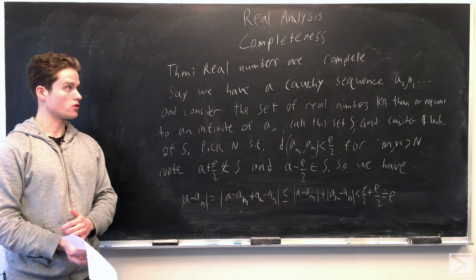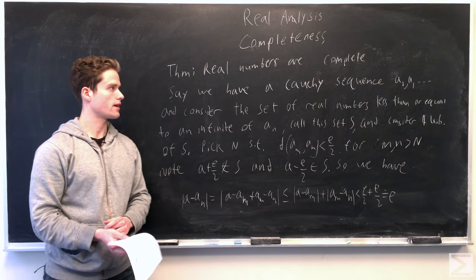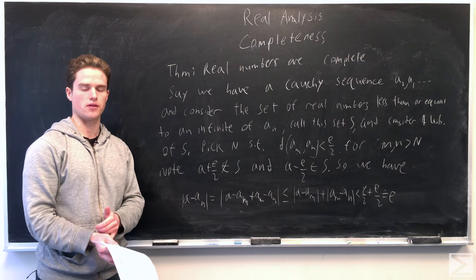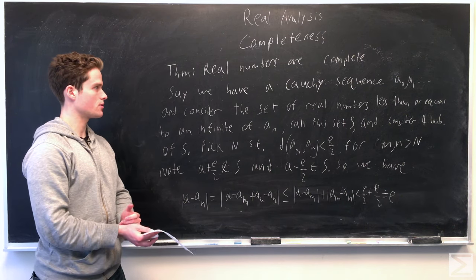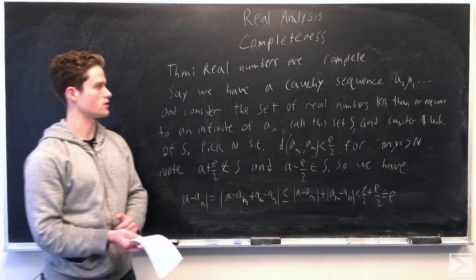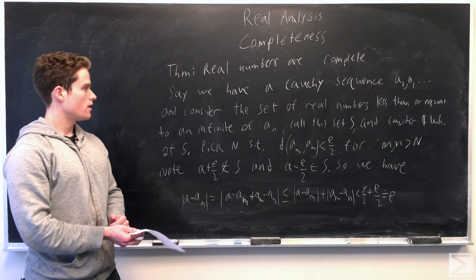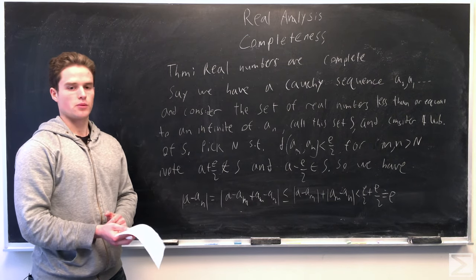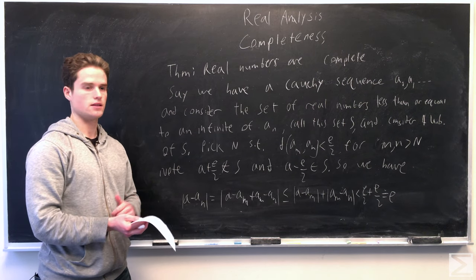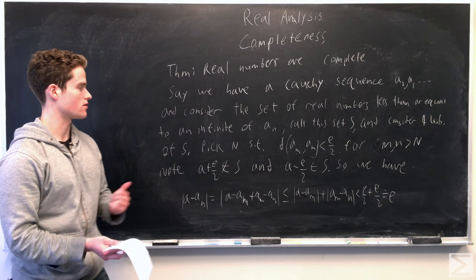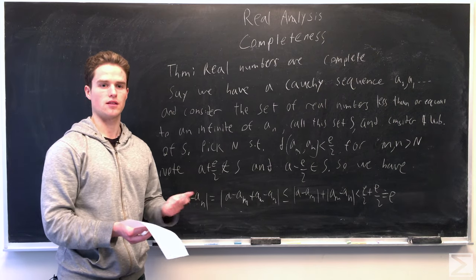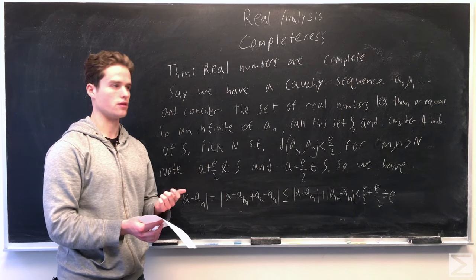We can prove that the real numbers are complete. We're going to use that a Cauchy sequence is bounded, and that bounded subsets of the real numbers have a least upper bound. Say we have some Cauchy sequence A1, A2, etc. We consider the set S of real numbers that are less than or equal to A_n for infinitely many n in our sequence. Since the Cauchy sequence is bounded, there is a bound above, and so we have a least upper bound of this set.